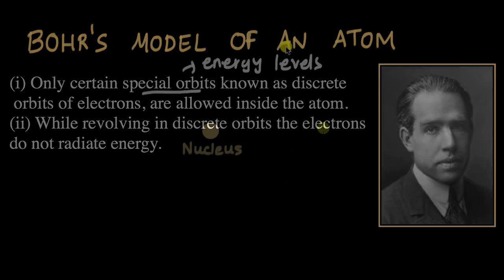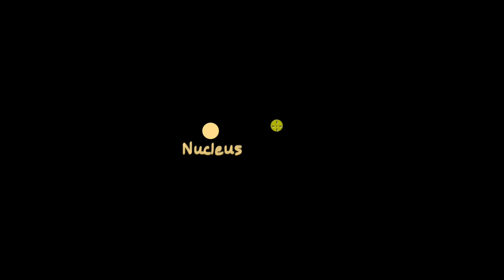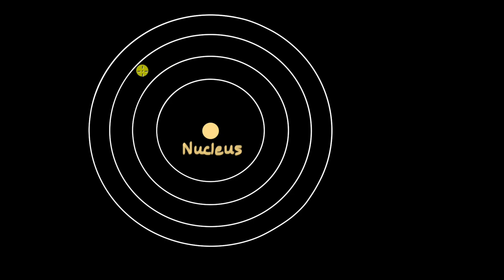According to Bohr's model of an atom, let's see how an atom would look like. Here we have the nucleus and these energy levels or discrete orbits of electrons around the nucleus. Each orbit has a specific energy.